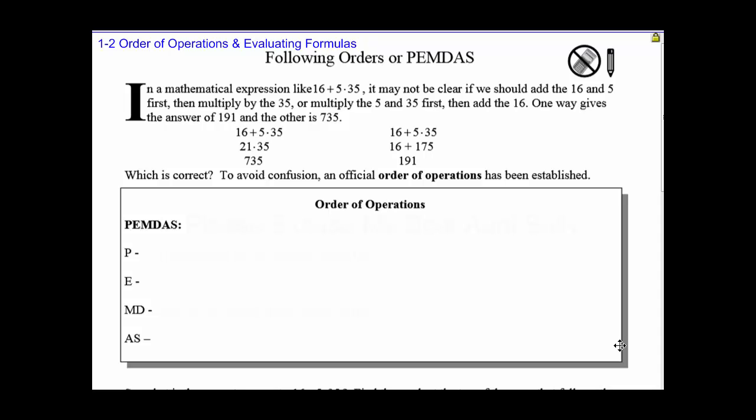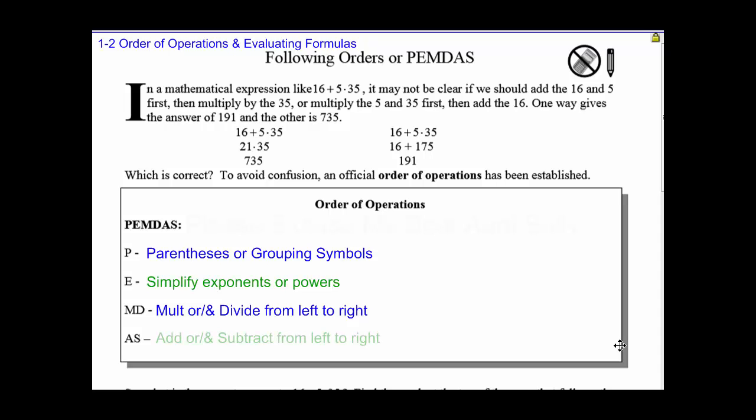The P stands for parentheses or grouping symbols. We're going to try and do whatever in parentheses or grouping symbols first. The E stands for simplifying exponents or powers. The MD says we're going to multiply or divide from left to right. And the AS stands for addition or subtraction from also left to right.